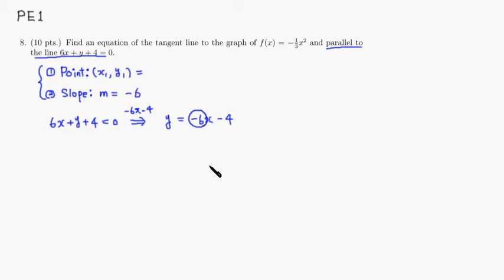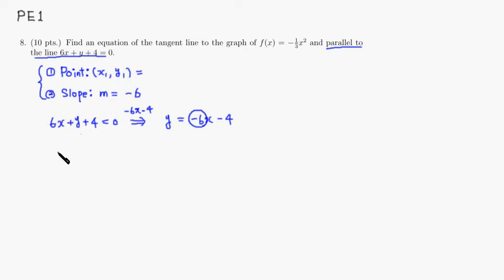This problem is slightly different from others — usually a point is given, but here the point is what we need to find. Knowing that the slope is −6, we need to find a point on the graph of f(x) such that the slope of the tangent line is exactly −6. The derivative of the function always tells us about the slopes of the tangent lines, so we take the derivative.